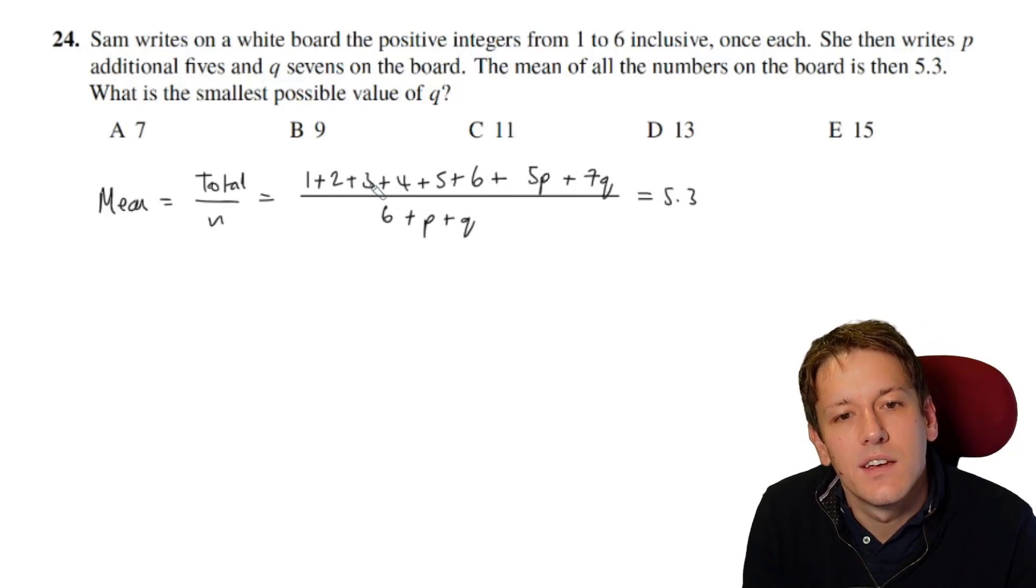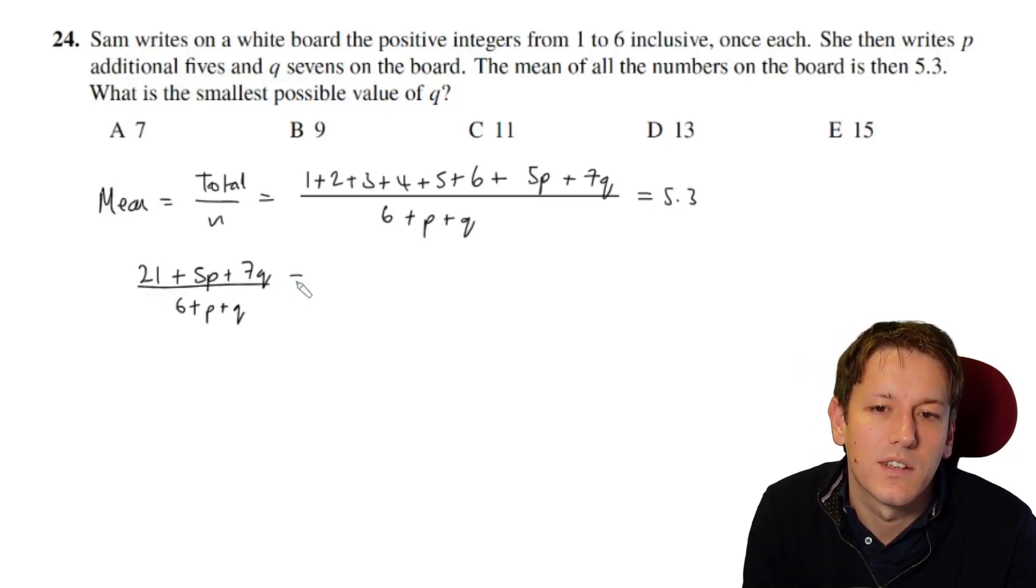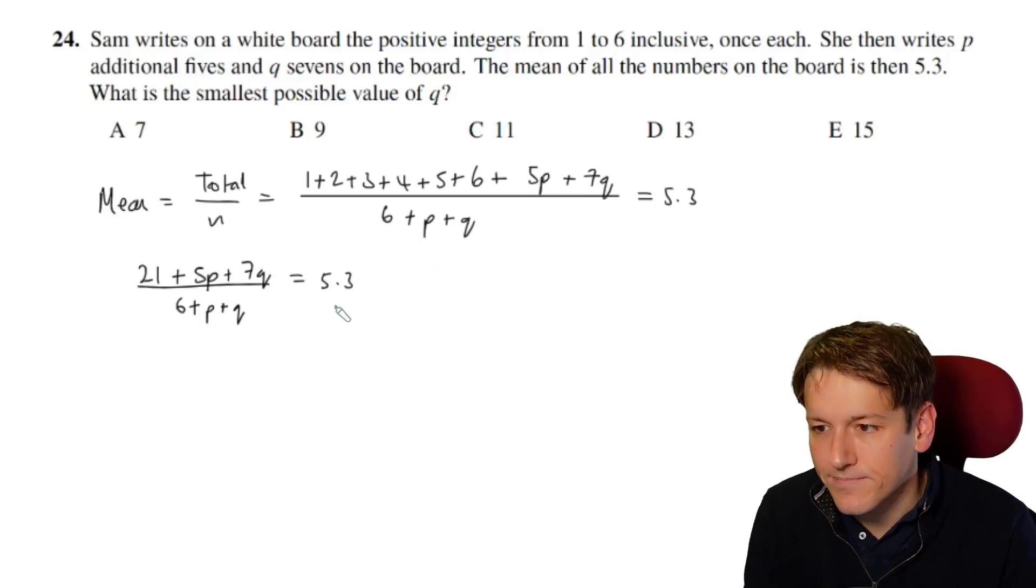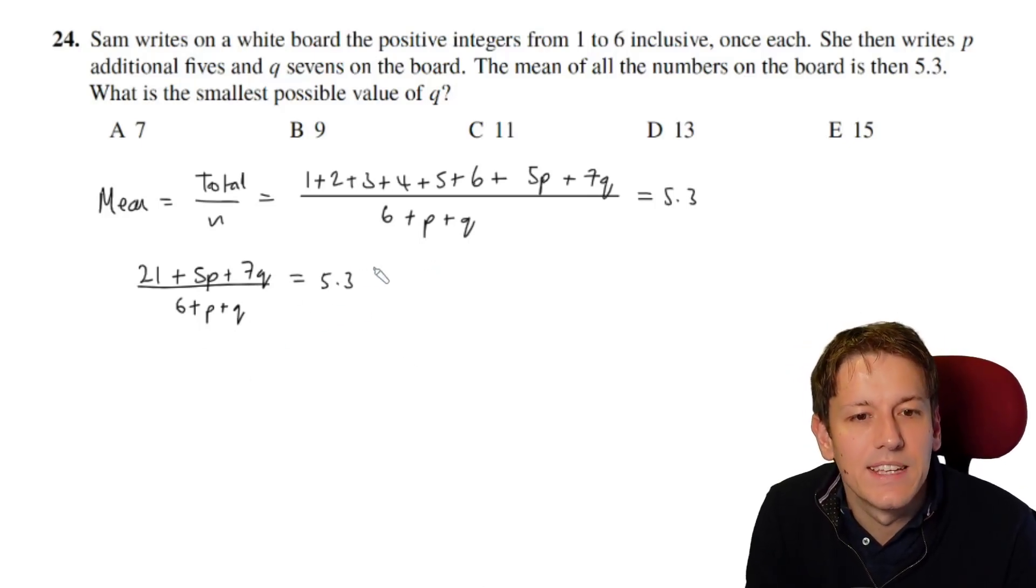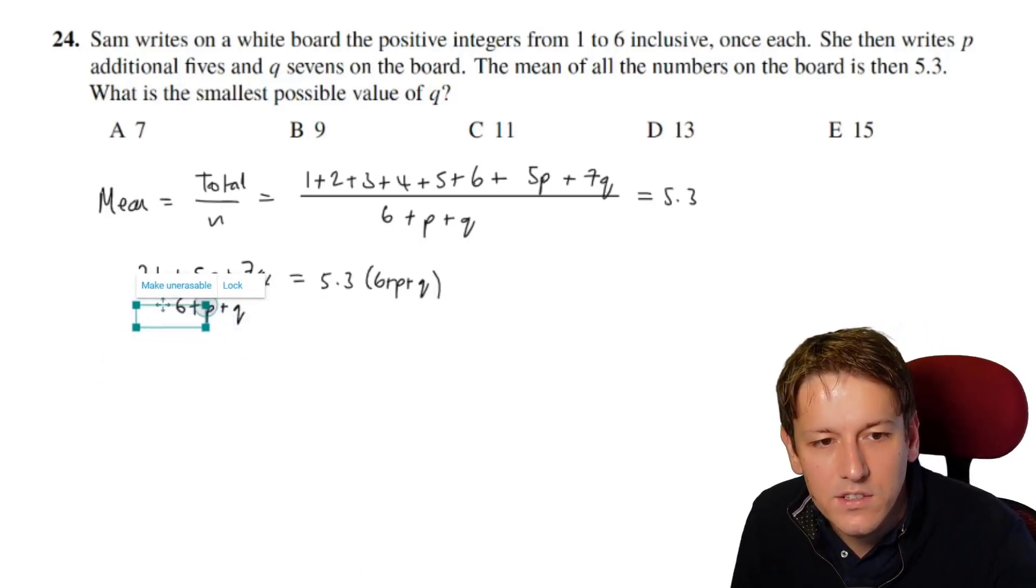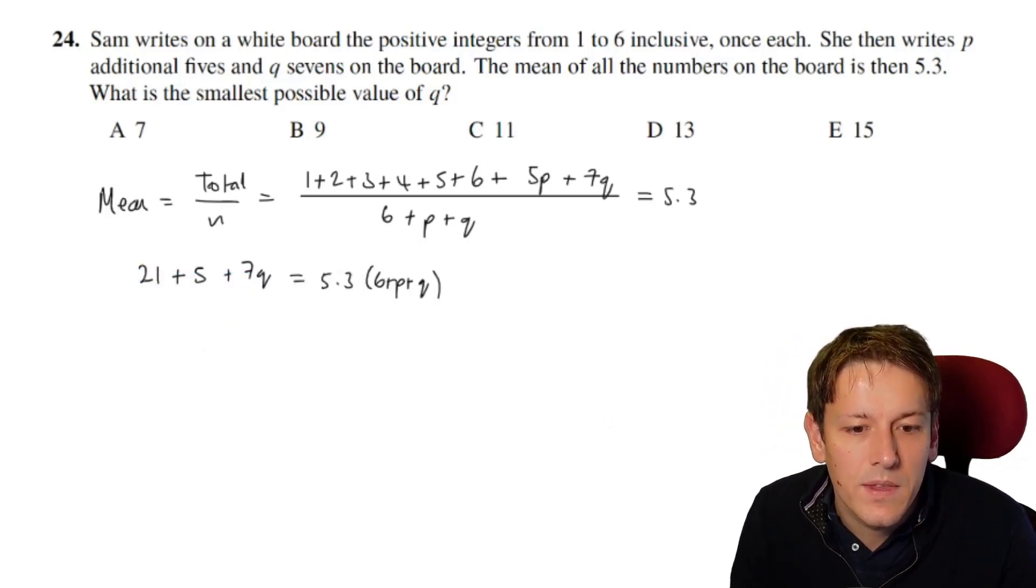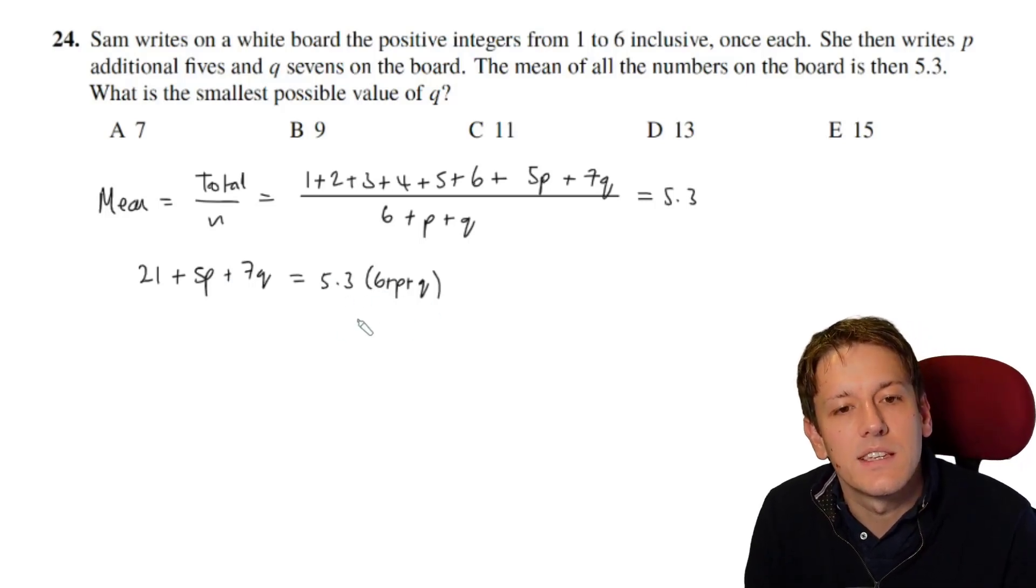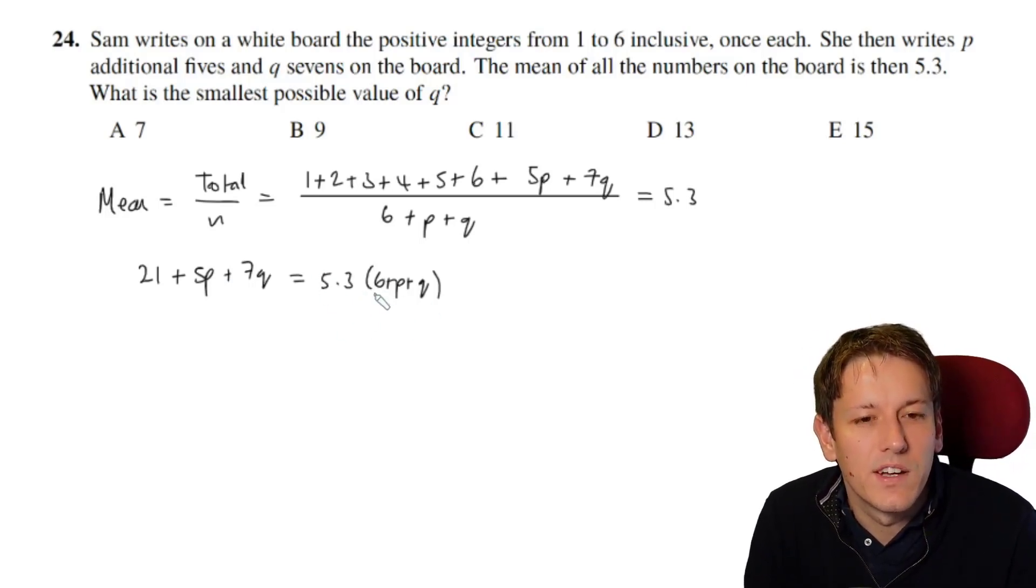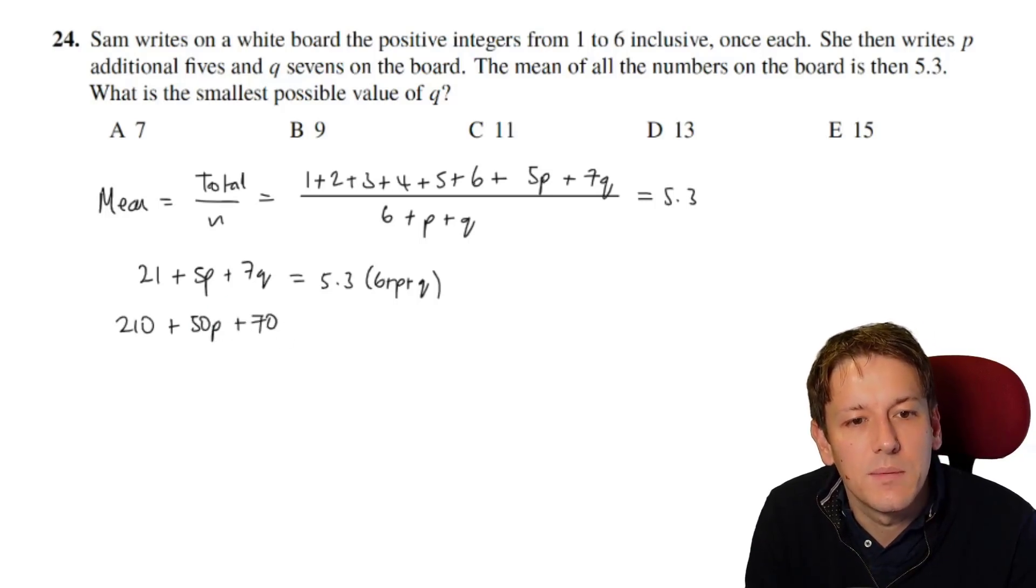So if you add these numbers together, you get 21, so we've got 21 plus 5p plus 7q divided by 6 plus p plus q is equal to 5.3. So if we multiply both sides by 6 plus p plus q, that will clear out the denominator here. I would probably prefer just to multiply this all by 10, so I don't have any fractions here, so 21 plus 50p plus 70q is equal to 53 times all of this.